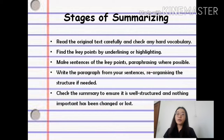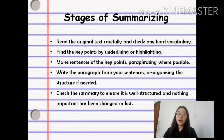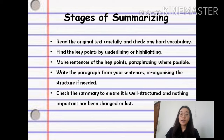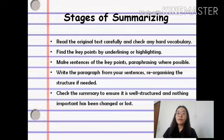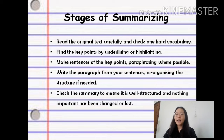The first thing we should do when we summarize is to read the original text carefully and check any hard vocabulary. Second, we should find the key points by underlining or highlighting. Third, we should make sentences of the key points and paraphrase where possible. Fourth, we should write the paragraph from the sentences we have made and reorganize the structure if needed. And last, we should check the summary to ensure it is well structured and nothing important has been changed or lost.